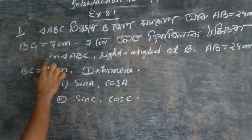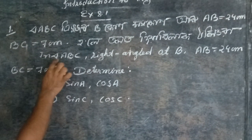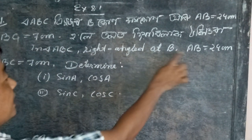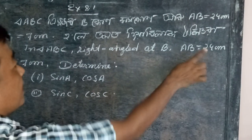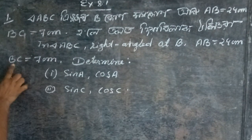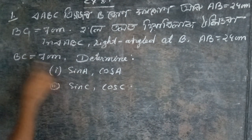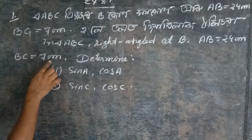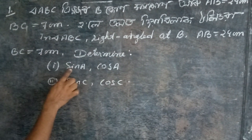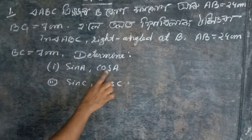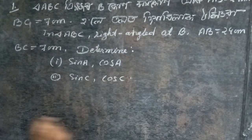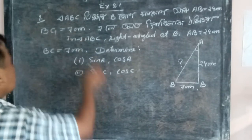In English as well: In triangle ABC, right angle at B, AB equal to 24 cm, BC equal to 7 cm. Find sin A, cos A, sin C, and cos C. So this is question number 1.